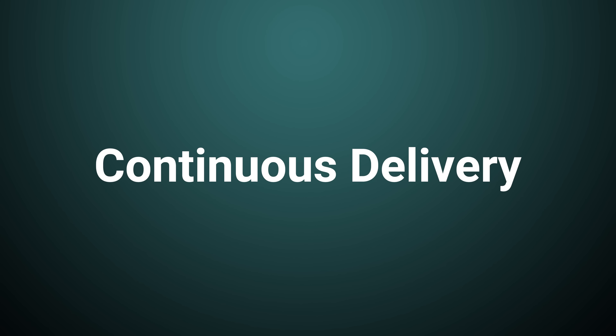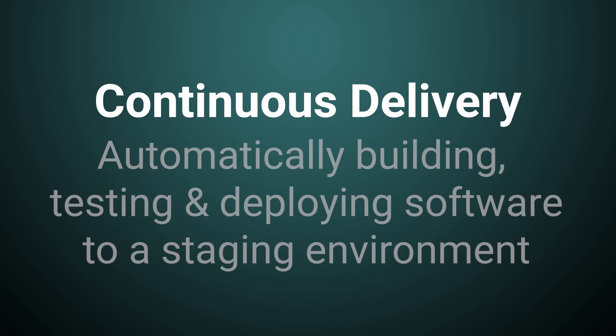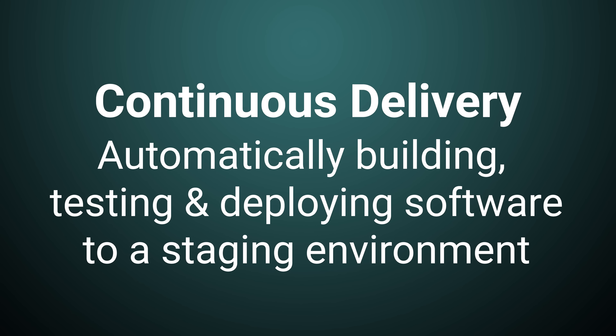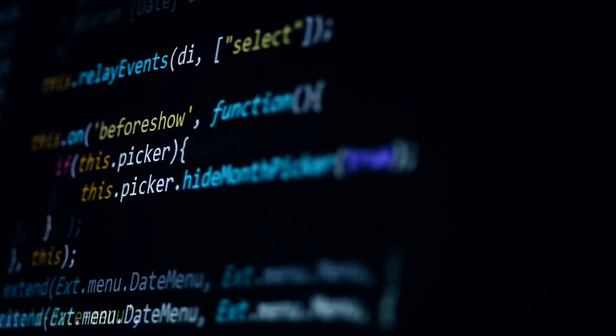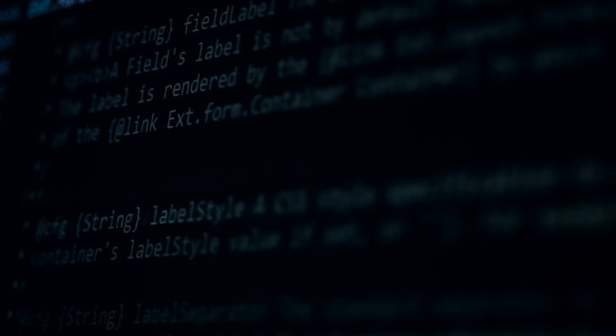Next up is continuous delivery. Continuous delivery is the practice of automatically building, testing, and deploying the software to a staging environment. In the CD stage, the software is prepared for production deployment, but it's not yet deployed. The goal of CD is to ensure that the software is always in a releasable state. CD involves using automation tools to build the software and run a series of tests to ensure that it's ready for deployment.